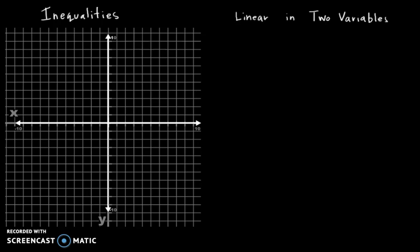There we go. Linear in two variables. So I'm just going to give an example because I know this is probably not going to be a very difficult thing to talk about. Let's look at one. Y is less than two-thirds x plus one. So the question is... how do you graph this?